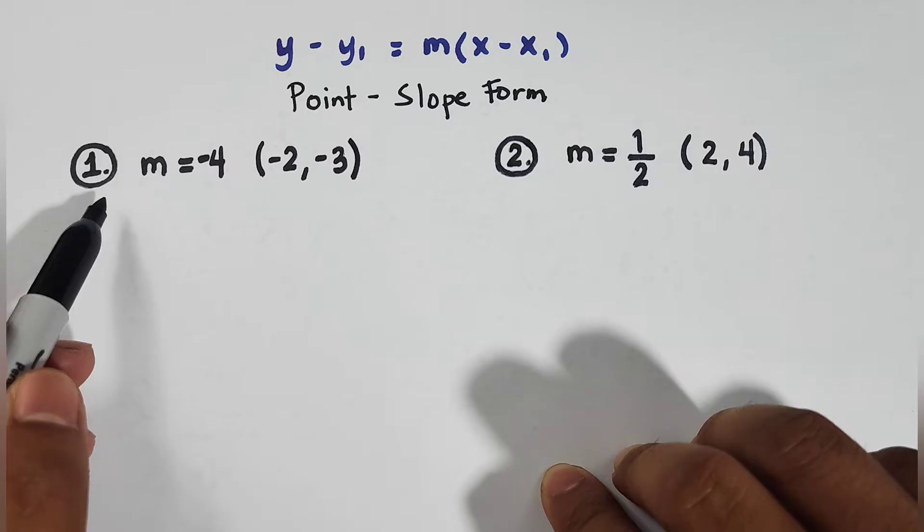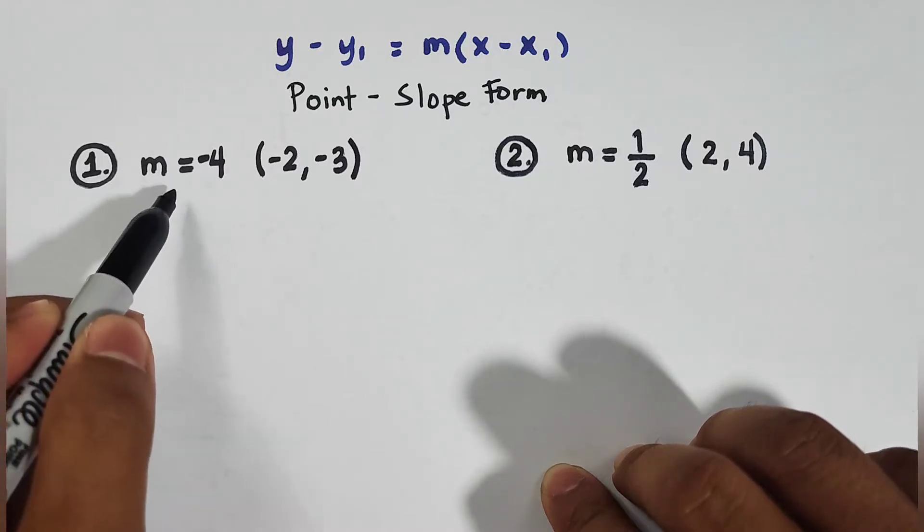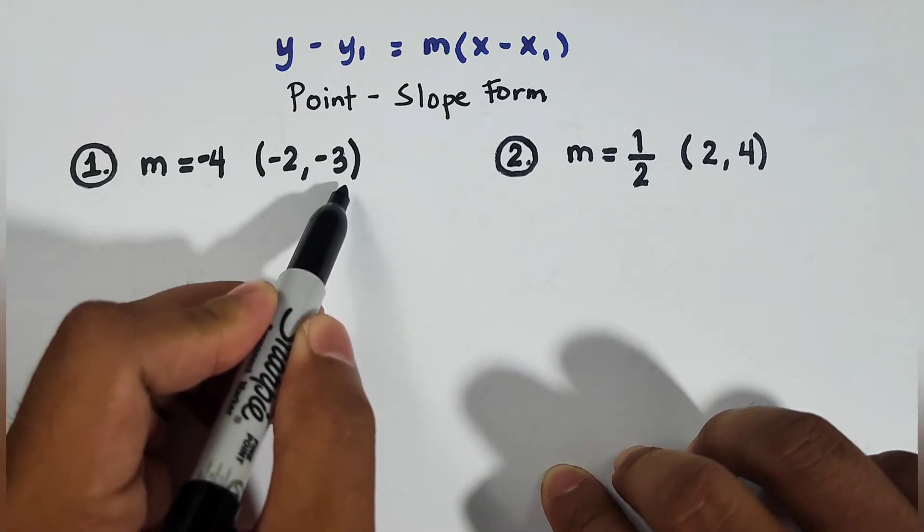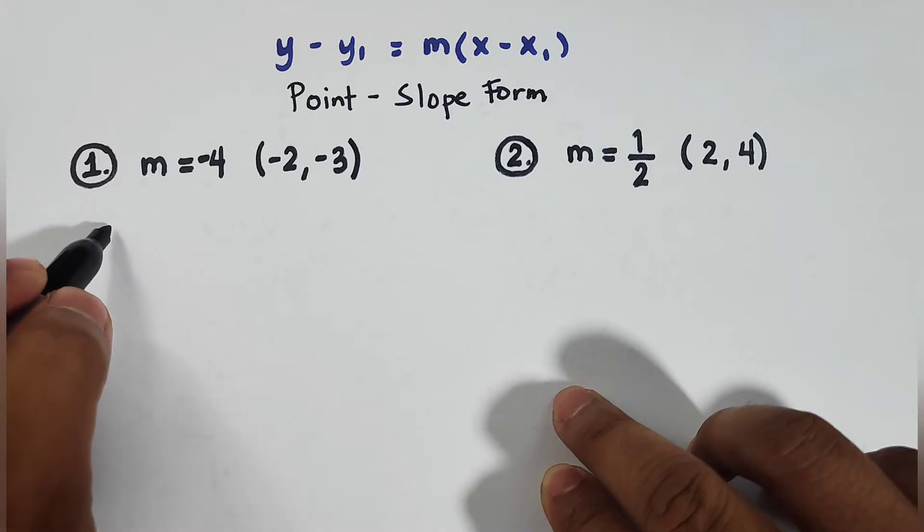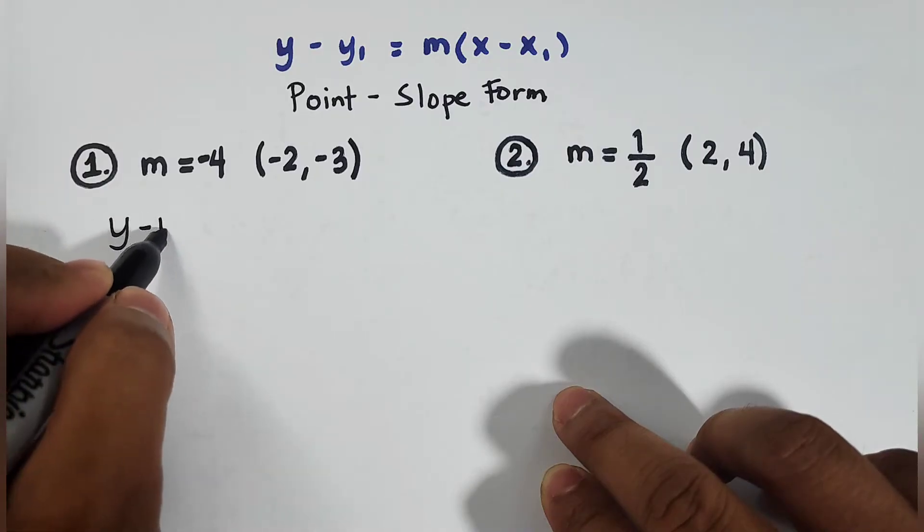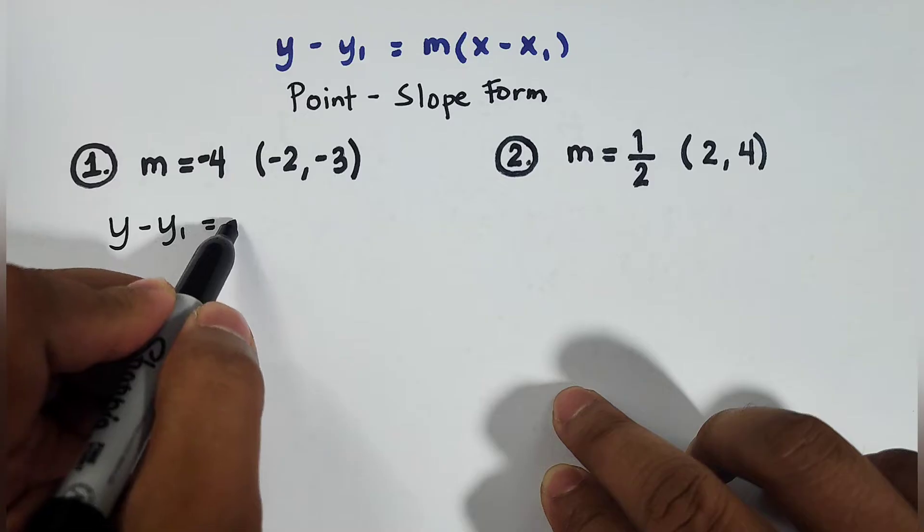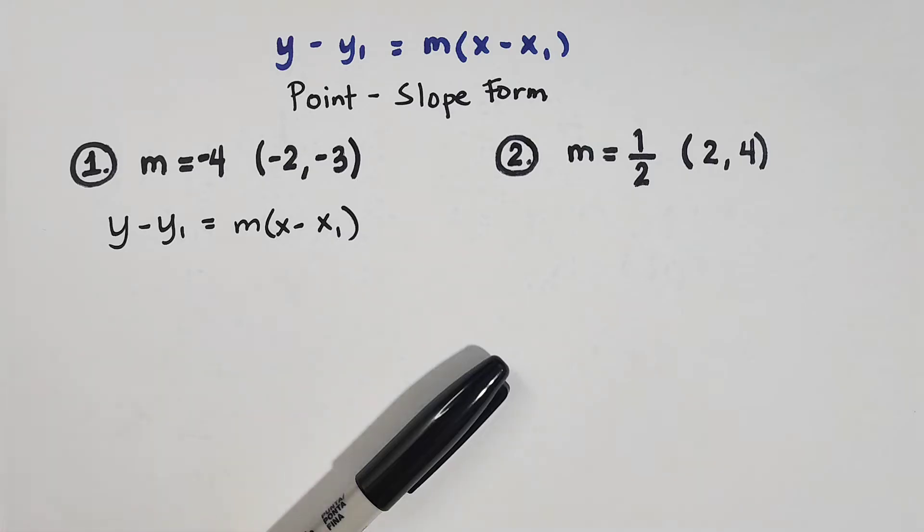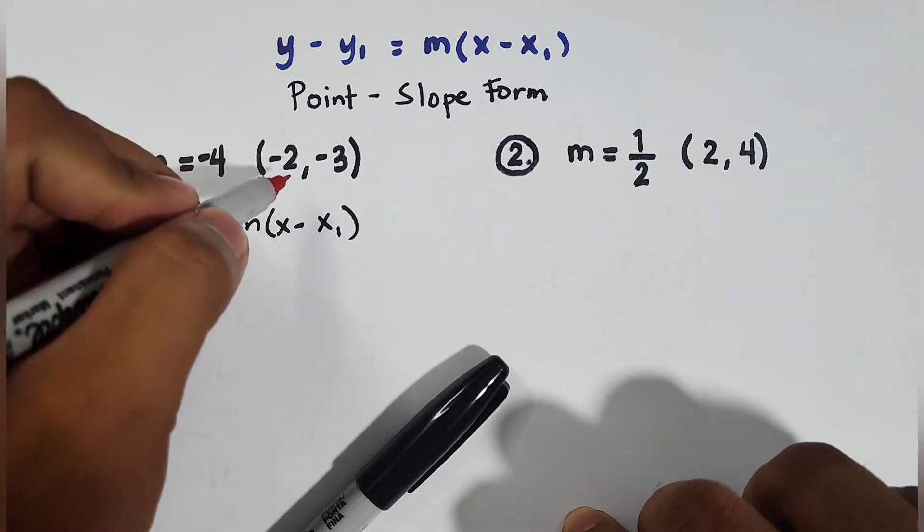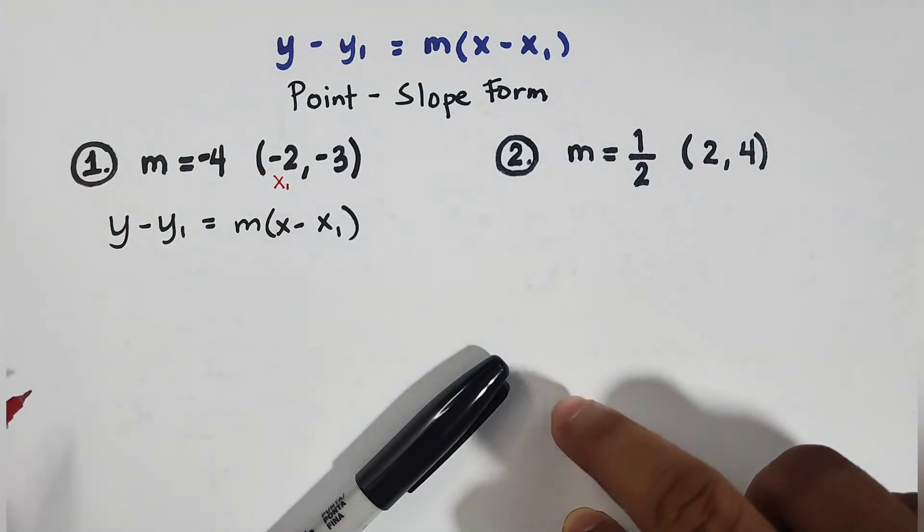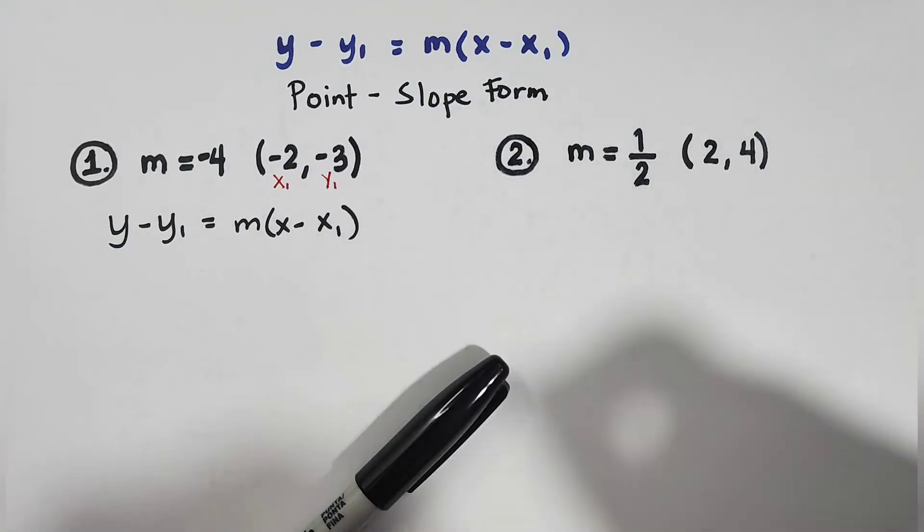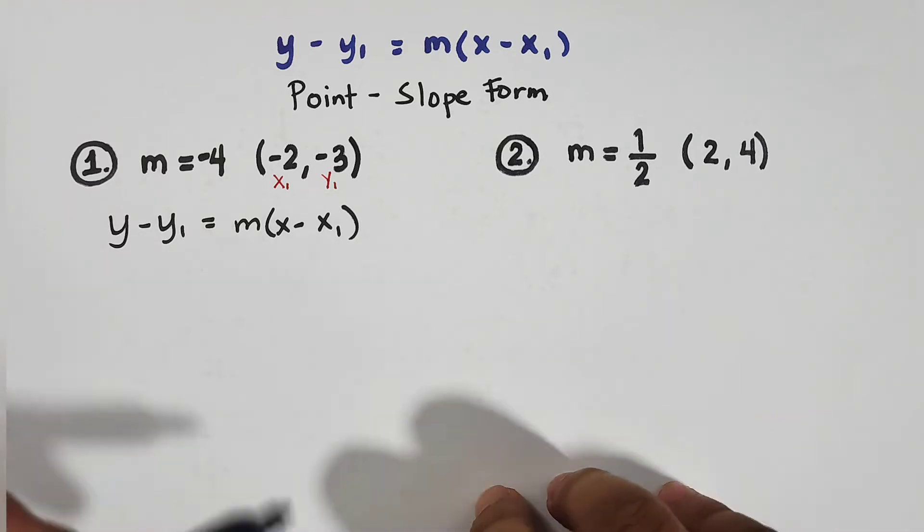Let's solve and find the equation of number 1. m is equal to negative 4 and the coordinates of the single point is negative 2, negative 3. Let's copy the given form, y minus y sub 1 equals m times x minus x sub 1. Now guys, in this form, your negative 2 represents x sub 1. Your negative 3 represents your y sub 1. And what we need to do is to substitute the values in the given form.